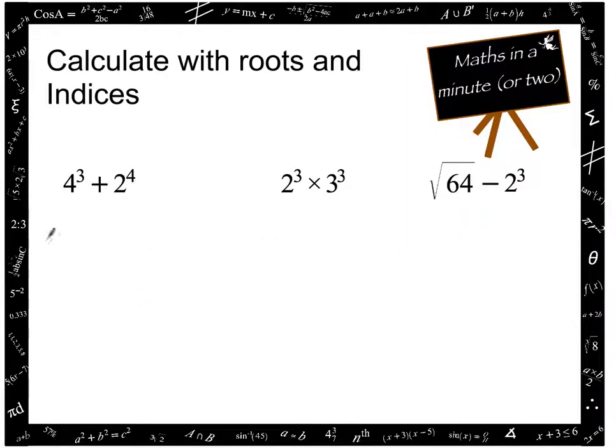As you can see I've got three examples here. The reason we can't use a rule of index here is because we have base numbers which are different. So for rules of indices see a different video.